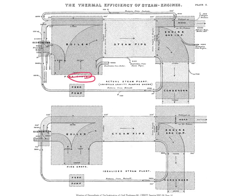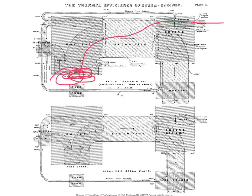This shows the input energy to the steam engine from the fire grate. He followed this energy as it goes through the boiler, the steam pipe, and finally is used for work. He was interested in comparing how much energy came in versus how much came out. He developed this kind of diagram — the Sankey diagram — to analyze energy flows in a device.